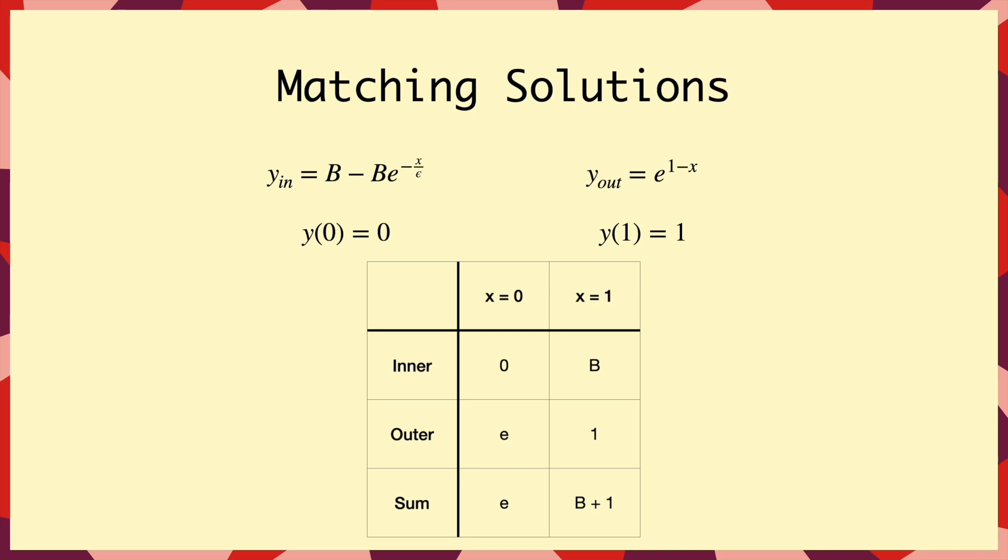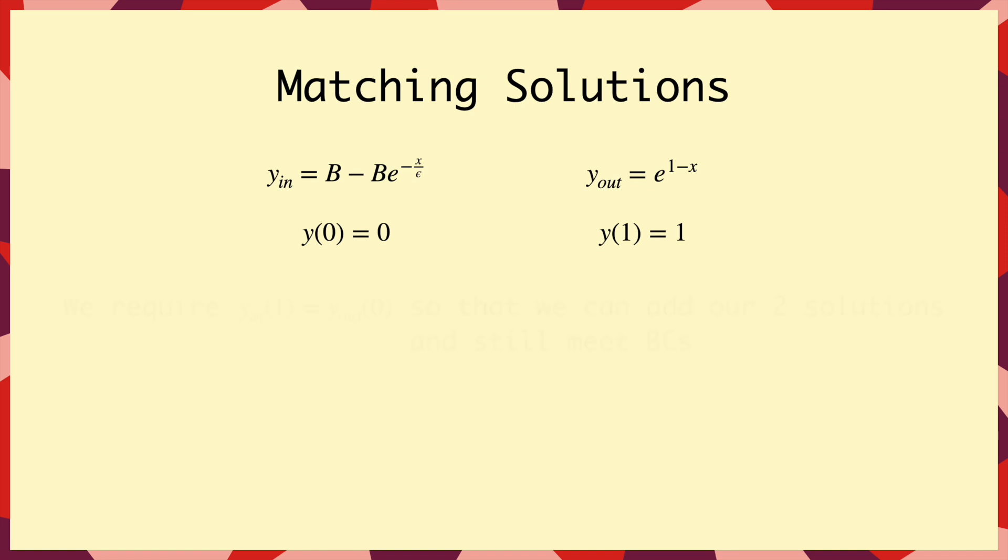And the way that we do that is by looking at the values of the functions on both of the boundaries. Now they both meet one boundary condition, that part's fine, but when we add the two solutions together, we'll be adding the values on each boundary. So that means we'll be adding on these red terms, and we won't satisfy the boundary conditions anymore. So to be able to fix that, we need these two overlap terms to be the same. Then that way we can just subtract one constant, and it'll fix them both at the same time. So here, to be technical, we need the value of the inner solution at 1 to be equal to the outer solution at x = 0, which means that B must be equal to e. And that's our final constant found, so we've got our exact inner solution.